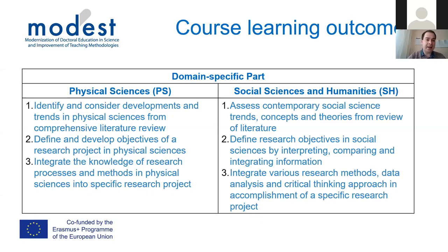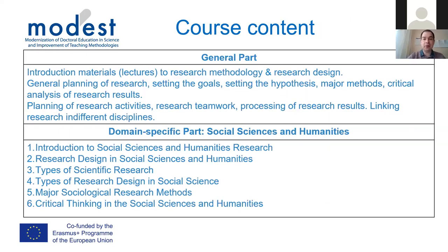We also developed learning outcomes for the domain-specific parts — physical sciences and humanities. Doctoral students in physical sciences have five learning outcomes in the general part and three in the physical sciences-specific part. The same structure applies for social sciences and humanities students. These learning outcomes are not too different, as both focus on identifying the research area, setting hypotheses, performing good research, and obtaining reproducible results.